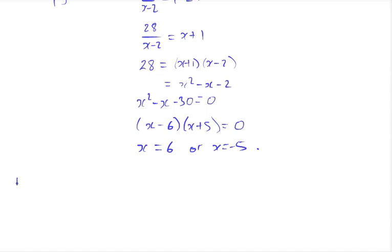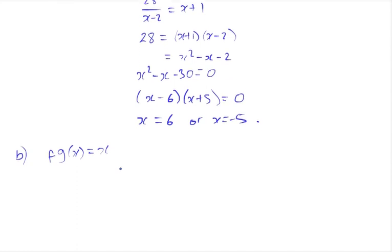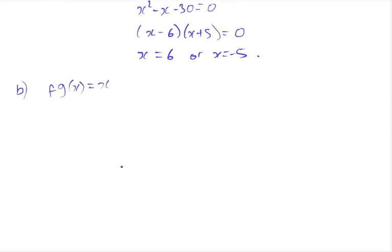In part A we just solved f of g of x equals x. If we apply f inverse to both sides, f inverse and f cancels out. So all that we're left with is g of x equals f inverse of x. x is only a variable, so this is the same as solving g of a equals f minus 1 of a.